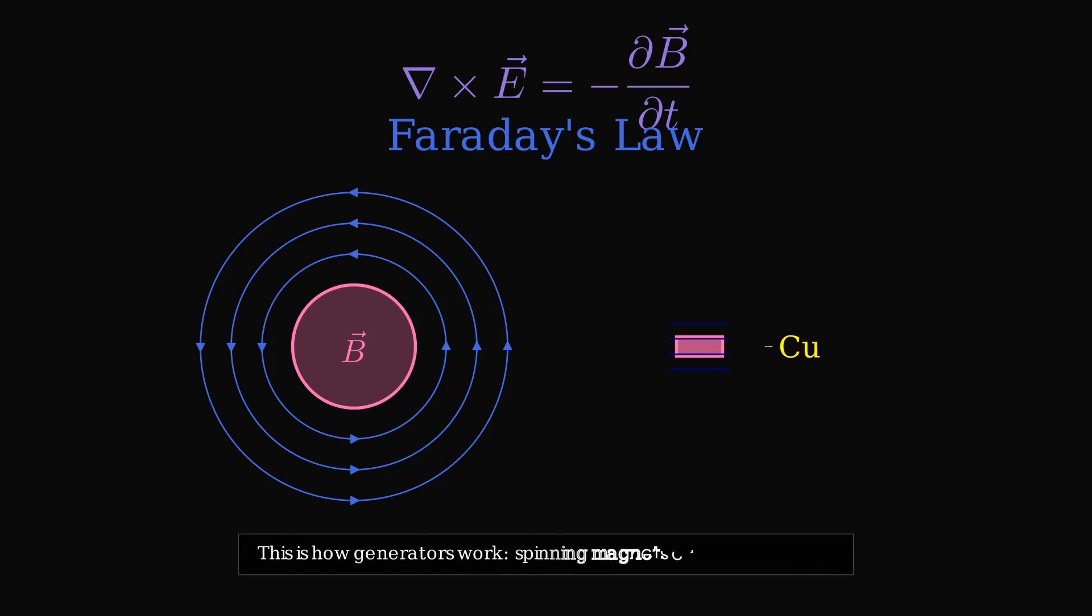This is how generators work. Spinning magnets create electricity. The rotating magnet creates a changing magnetic field, which generates electric current in the surrounding coils.